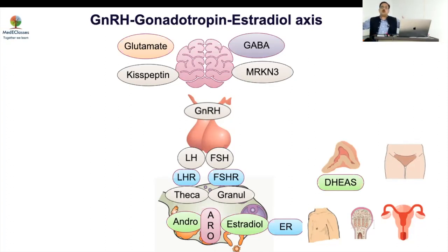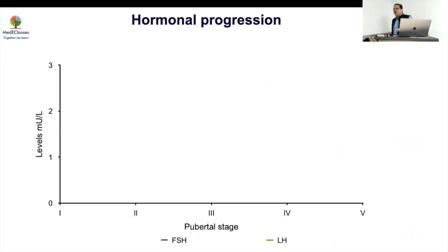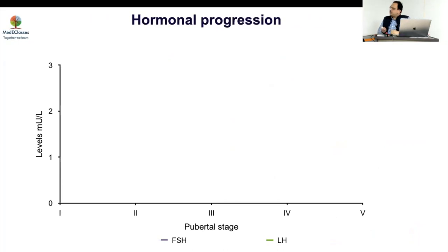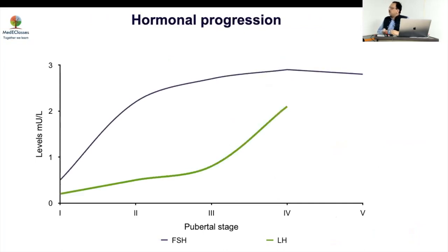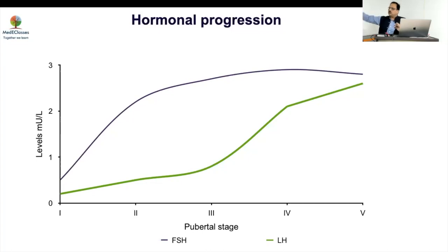FSH is always high first and then LH takes over — this pattern occurs in fetal life, mini-puberty, puberty itself, and each menstrual cycle. FSH is the predominant female gonadotrophin initially, then LH rises. This has diagnostic implications: if LH is high, puberty has been entered — FSH has no role in determining pubertal onset. Conversely, very high FSH with low estrogen indicates ovarian failure.